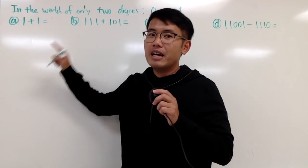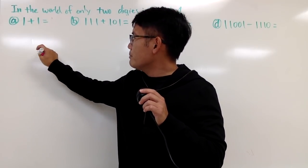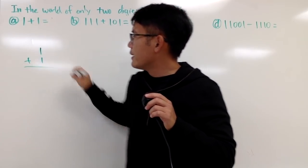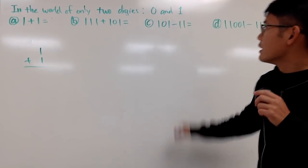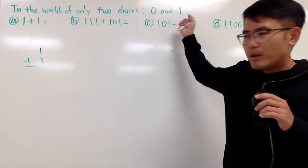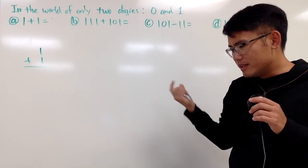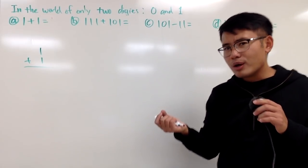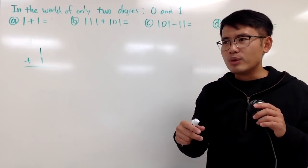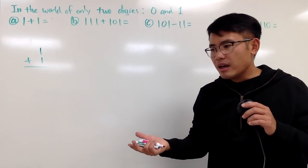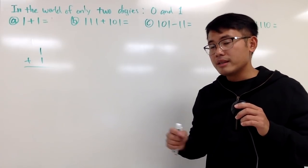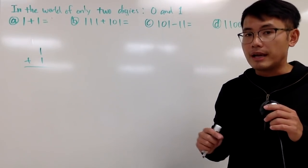So let's see, for the first one, we have to do 1 plus 1, right? Well, 0 and 1... I know in this kind of situation, when you add anything to 0, it will still be the same thing. So 1 plus 0 is 1, I know that. 0 plus 0 is 0, I know that.